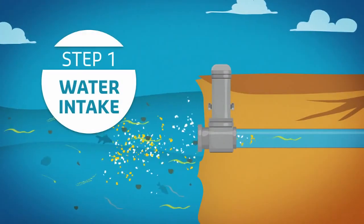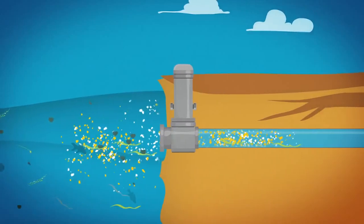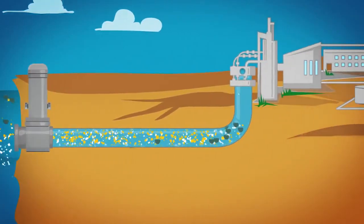To protect the marine ecosystem, seawater is pumped at a speed three times slower than a fish swims.